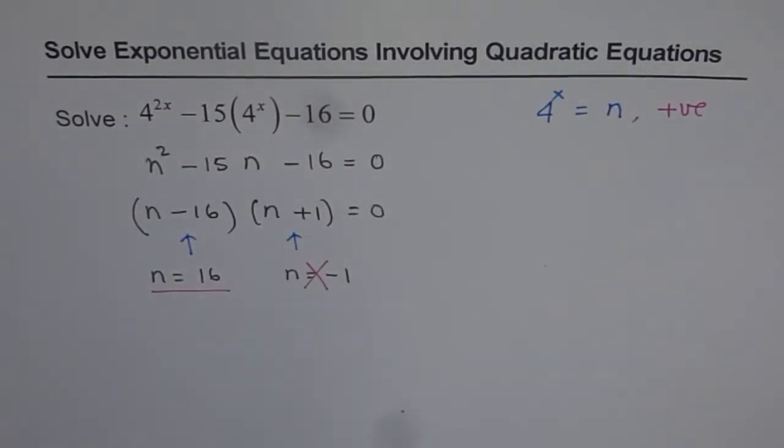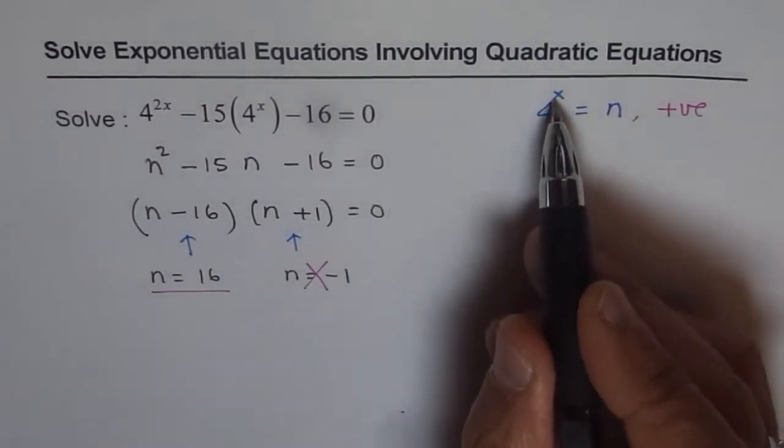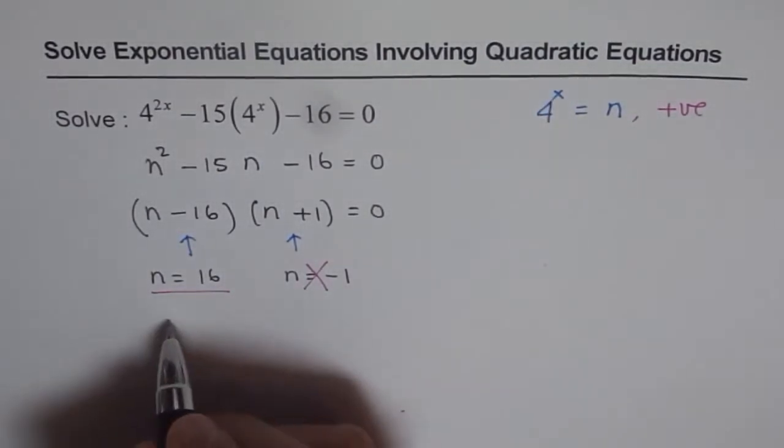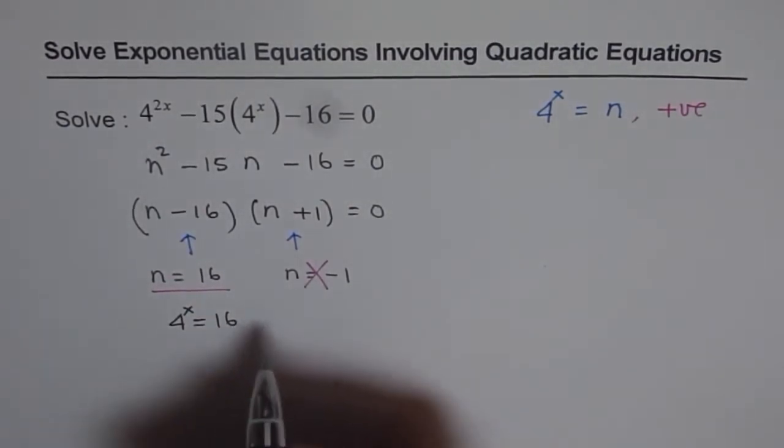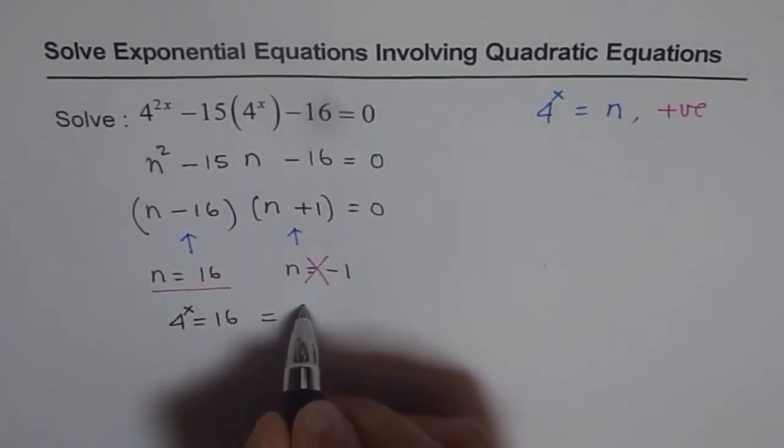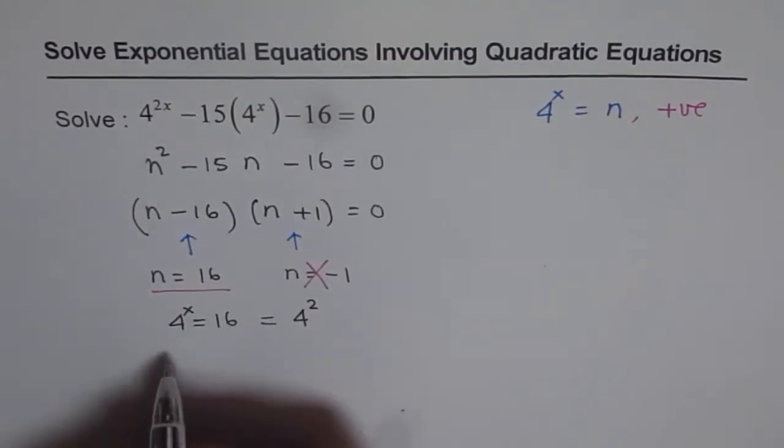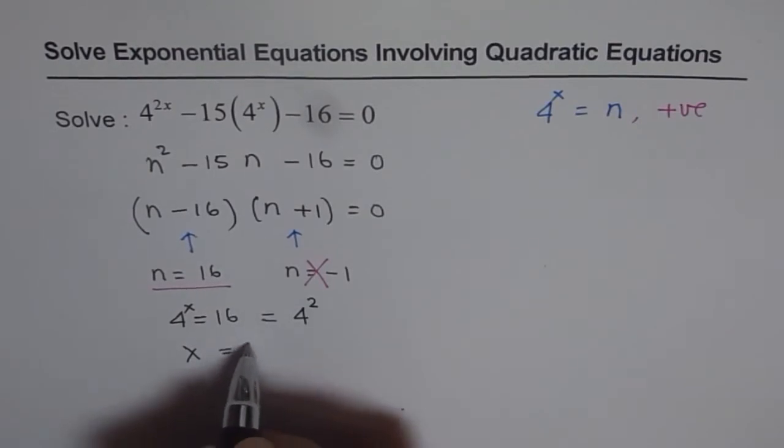With that, we can calculate the value of x. We can write 4^x = 16. From here, we know 16 is actually 4^2. And we get our solution as x = 2.